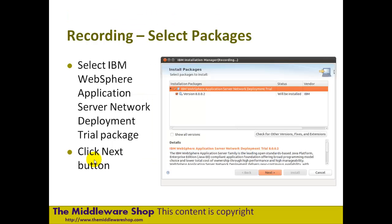Once the installation is started, we get a wizard which goes through what's available in the installation package. In this case, you can see that it tells us it's a Network Deployment trial and it's version 8.002, so it's probably fixed pack level 2. It might be a later version when you go to trial — this was done a few months back, so it was the fixed pack at that time.